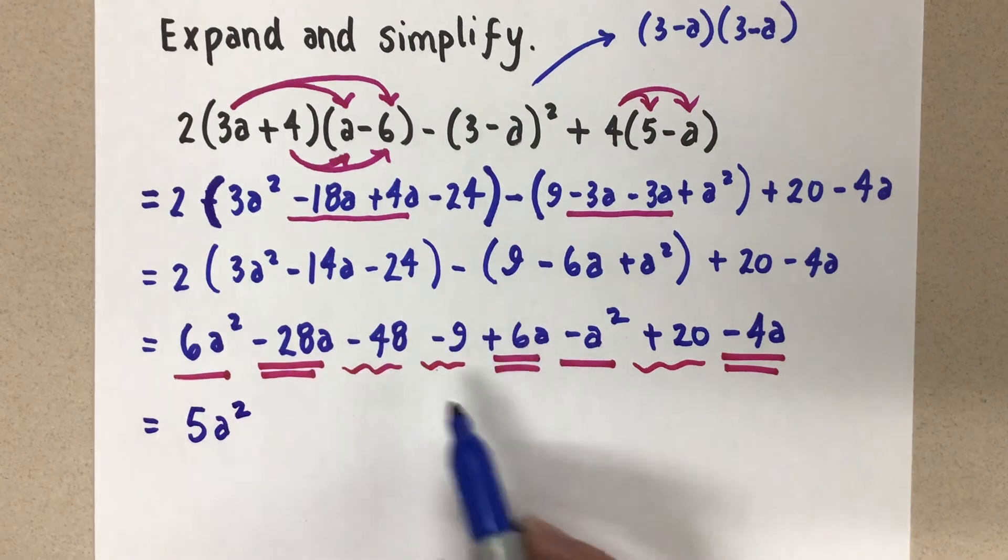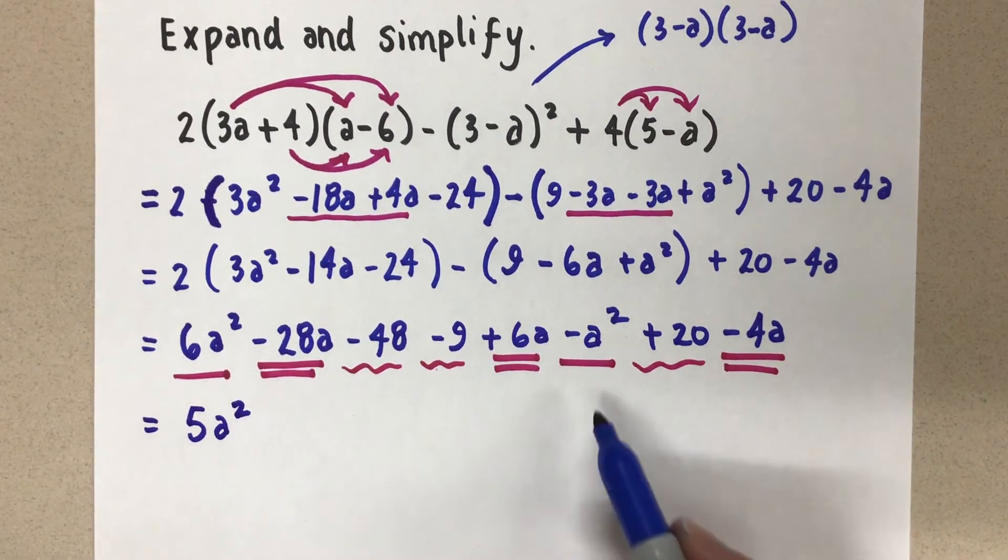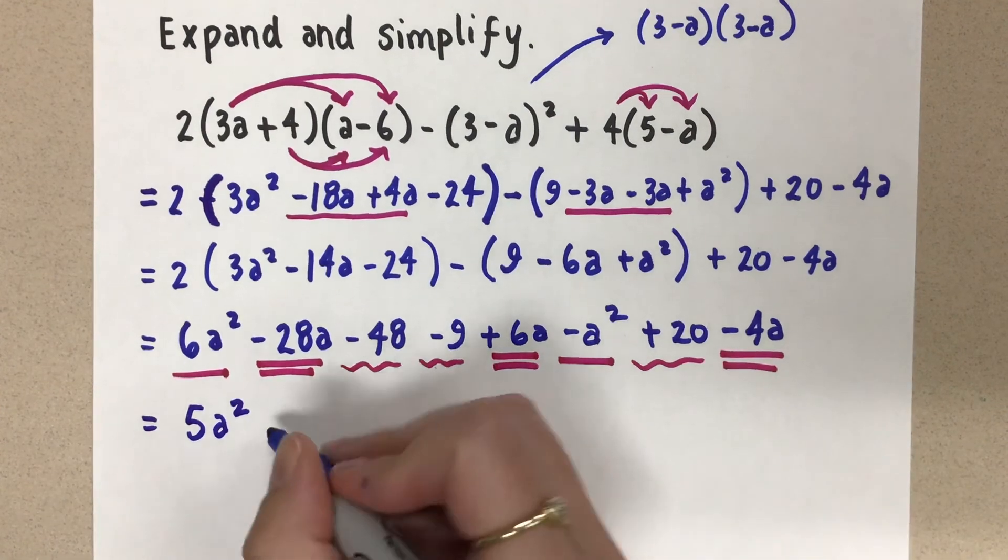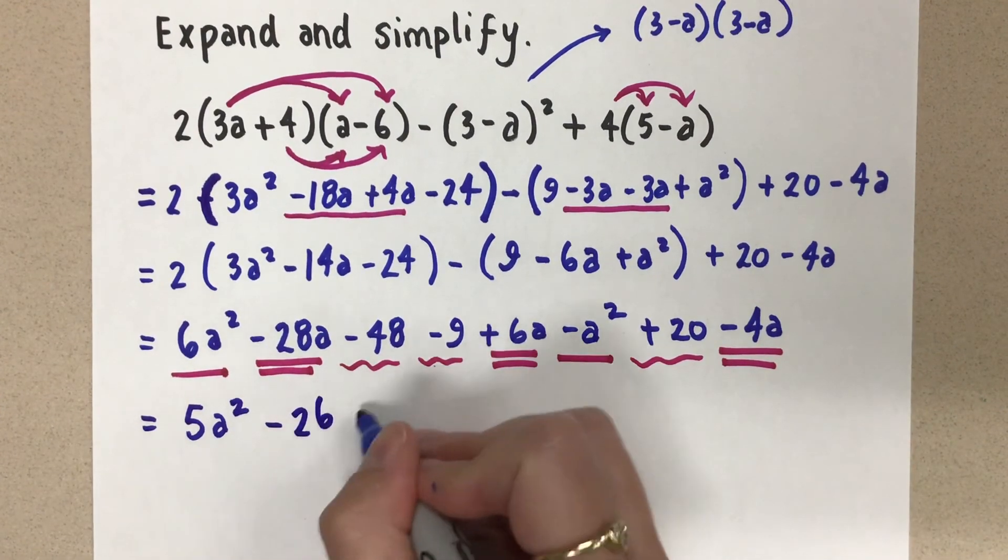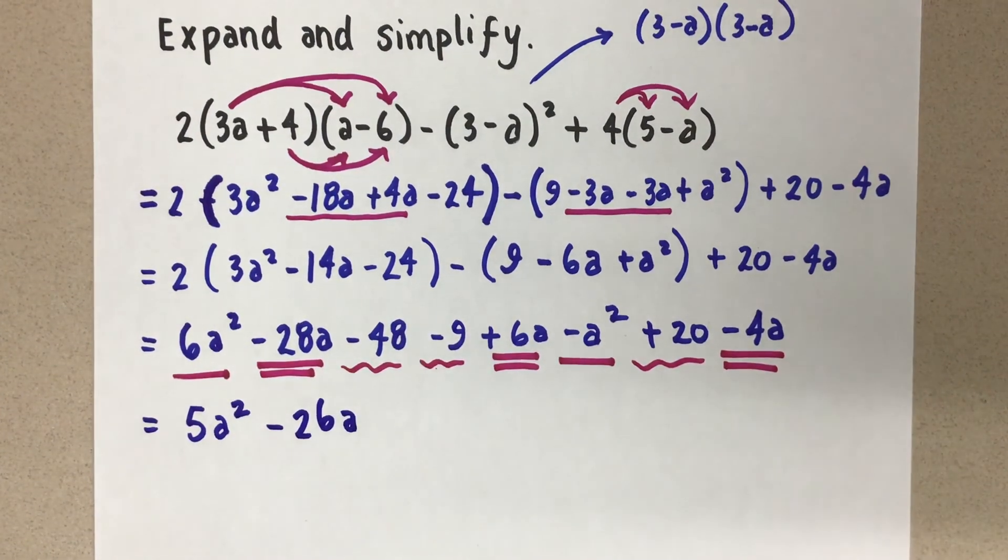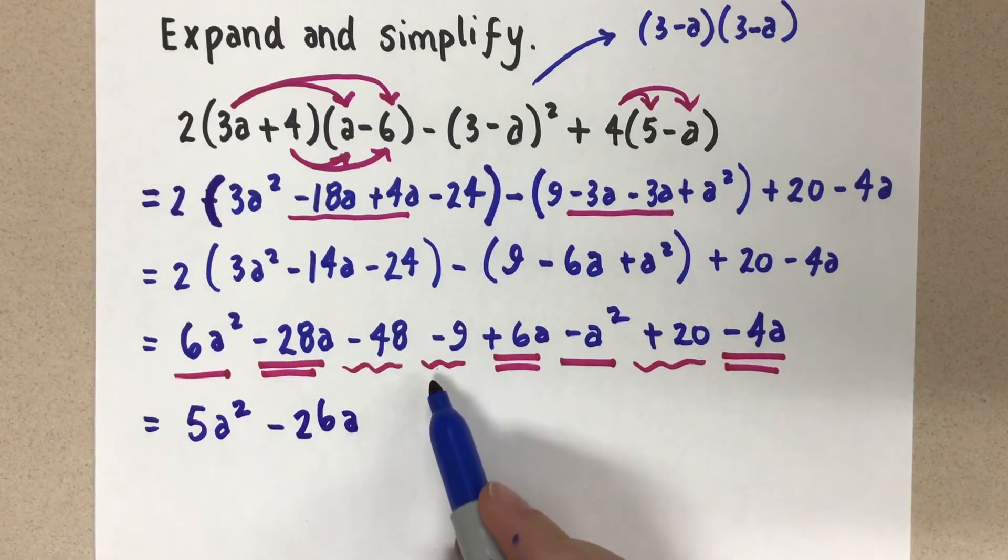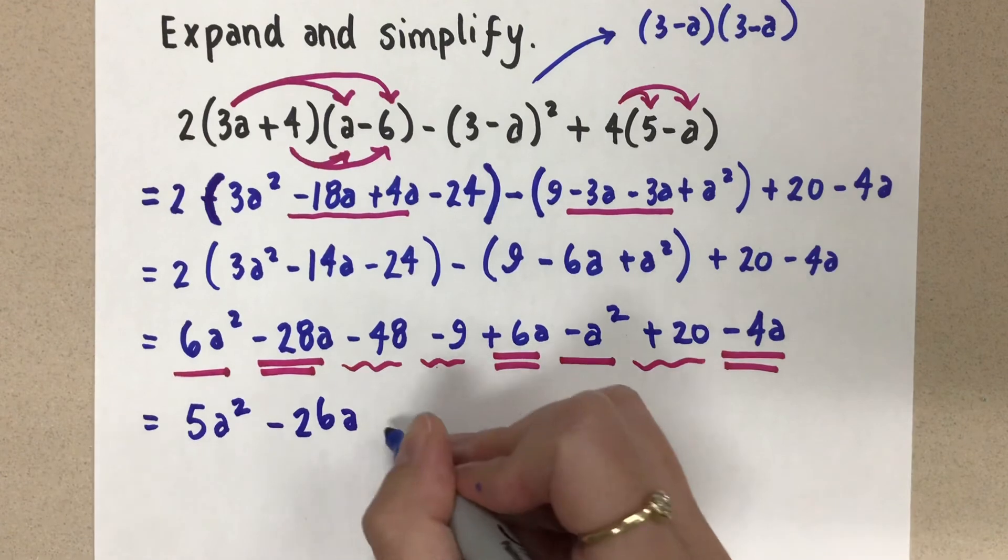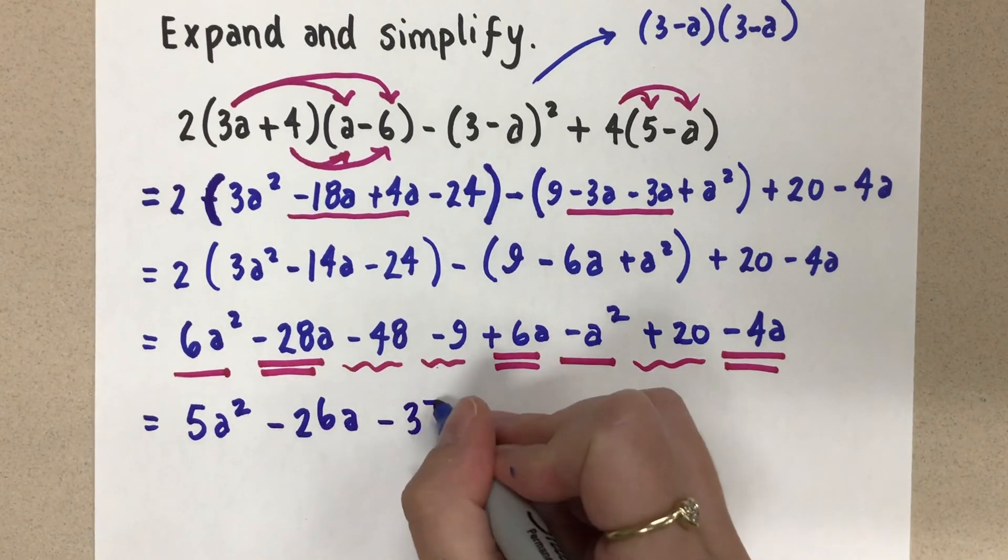We have negative 28a plus 6a minus 4a. And that is minus 26a. And then negative 48 minus 9 plus 20, I think is minus 37.